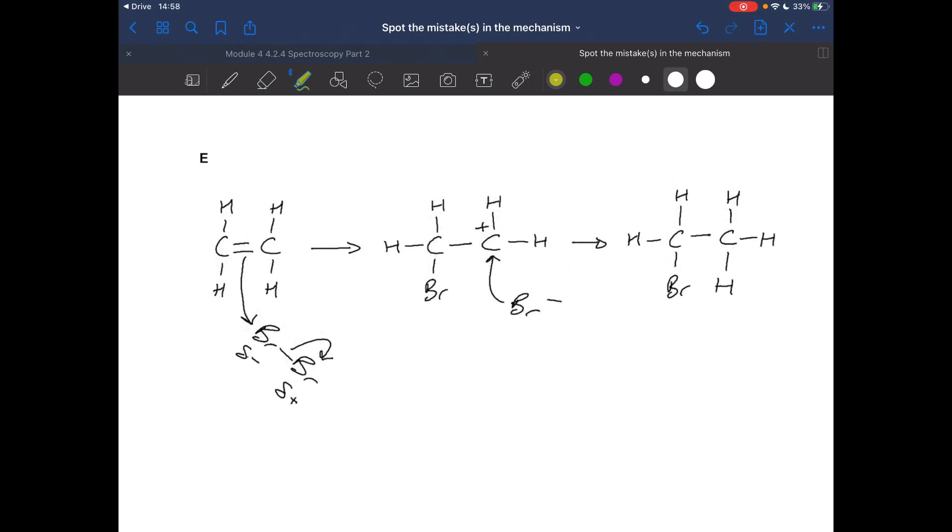Mechanism E, there's three mistakes in this one. The first one is here, the dipole is the wrong way around. The next mistake is the fact that they've taken this curly arrow here - they haven't taken it from a lone pair, so there's a mistake there. And the third mistake is the fact that they've put a hydrogen there and it should have been a bromine.